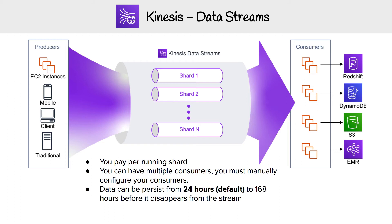We're going to first take a look at Kinesis Data Streams. The way it works is you have producers on the left-hand side, which are going to produce data and send it to the Kinesis Data Stream, and that data stream is going to then ingest that data.